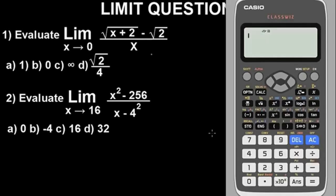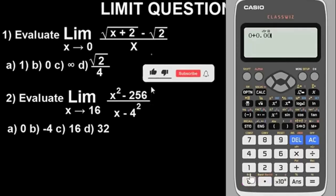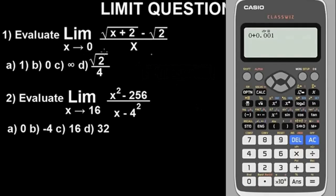This is the constant we're going to add to the value the limit is tending to. X is tending to zero, so you press 0 + 0.001. This constant is 0.001. If it was tending to 2, we would do 2 + 0.001, but since it's tending to 0, we use 0 + 0.001—very important.